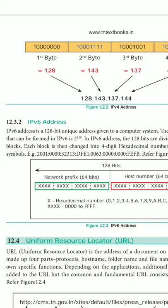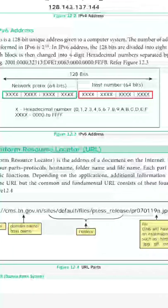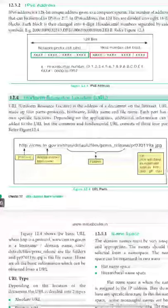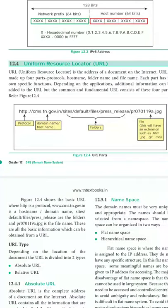The next topic is Uniform Resource Locator, which is a URL. Every website has a URL, and you can use it to share or link a webpage. For example: HTTP is the protocol, cms.tn.gov.in is the domain name, and /sites/default/files/press_release is the folder path with the file name at the end indicating which file is to be accessed.